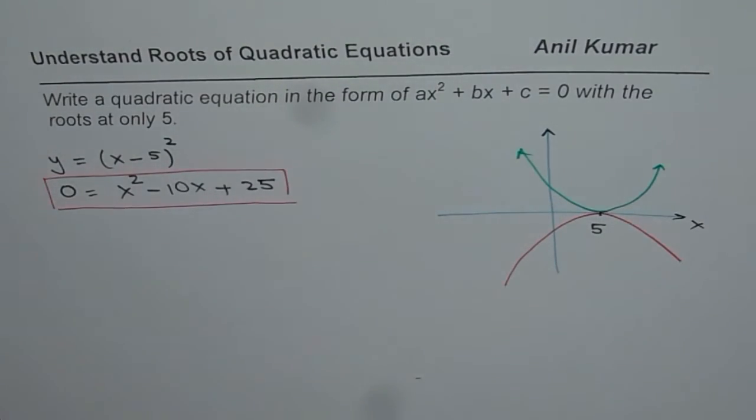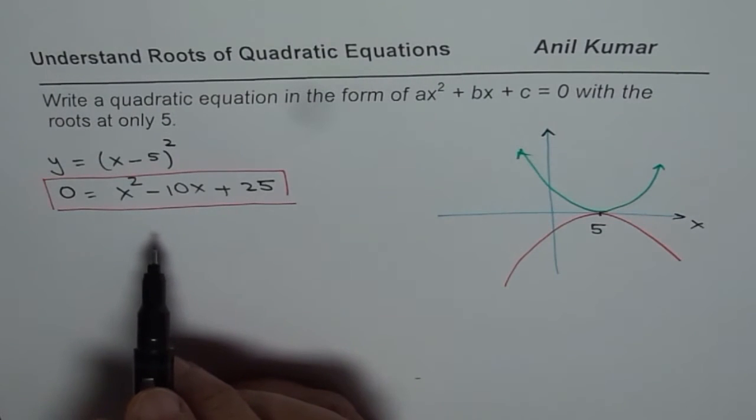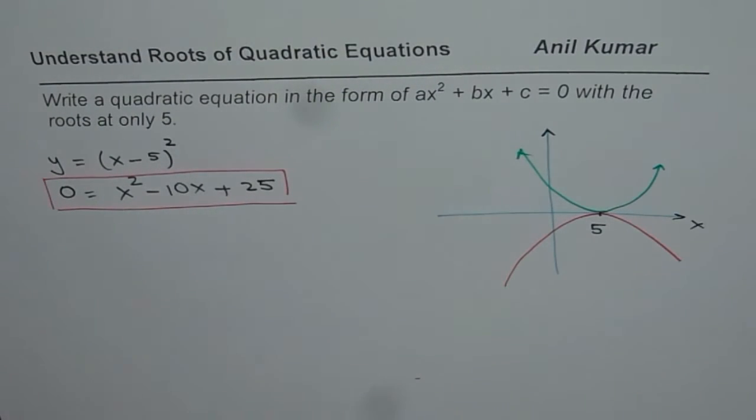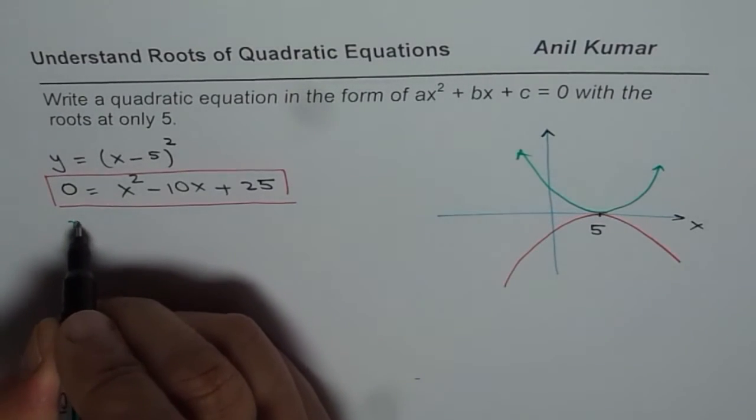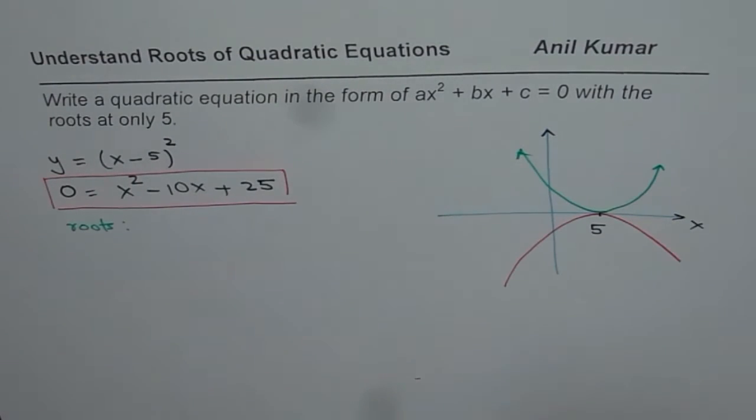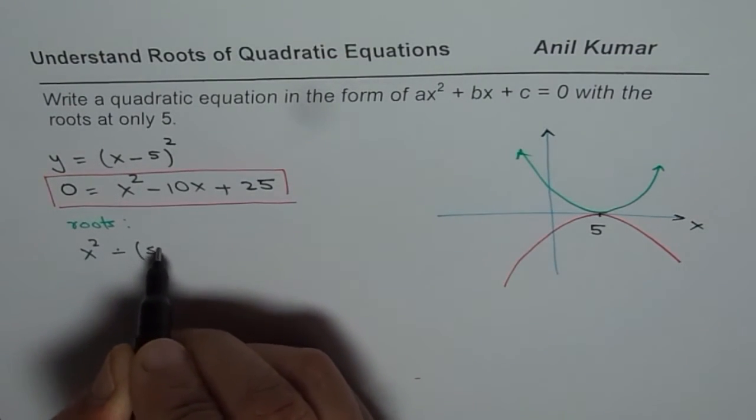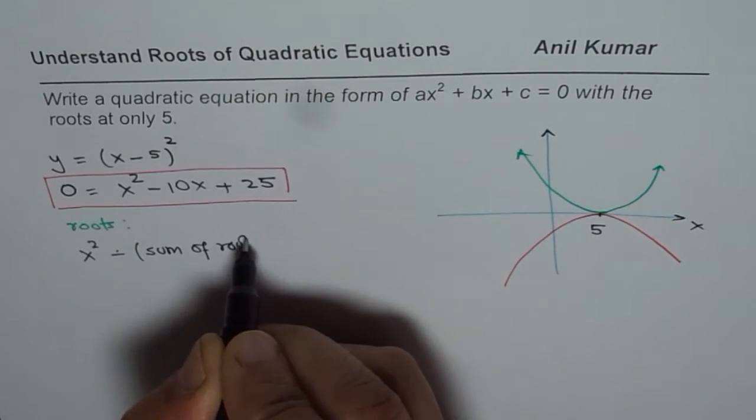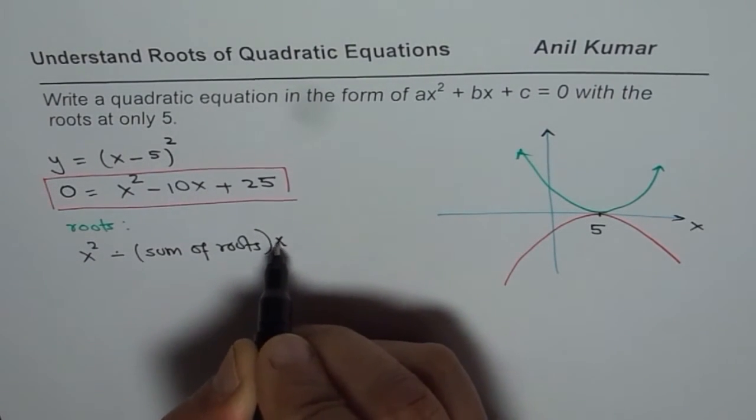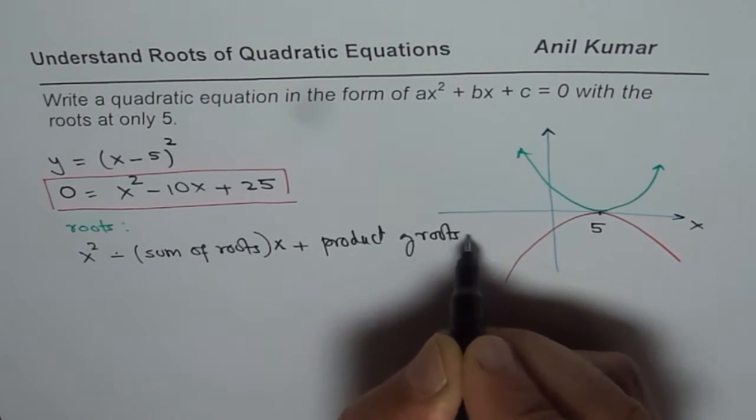So that could be one solution for us. Now, this solution we got from the concept of factors or you can say the vertex. We could actually also write equation with one root from a different concept. Let us recall that given roots at P and Q, let us say we have roots, then we could write a quadratic function in the form of X squared minus sum of roots times X plus product of roots equals to 0.